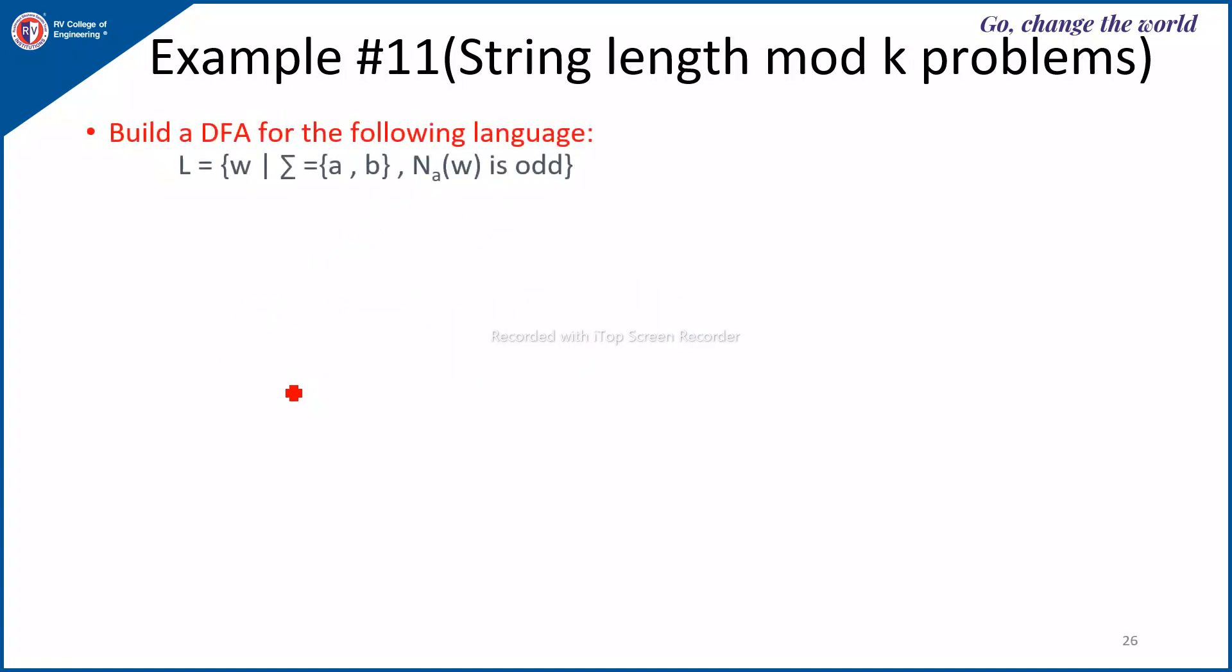Next, here you can observe W such that number of A's of W is odd. So here it is counting on only A's, the number of B's is not required. So odd means the number of A's if you do modulo 2, the remainder should be 1. So you will be having just two states, Q0 and Q1.